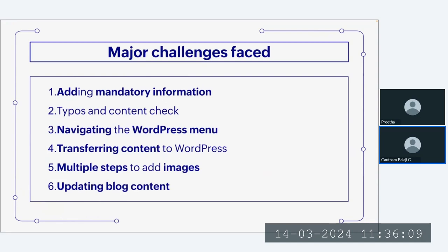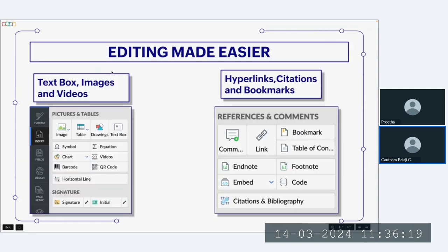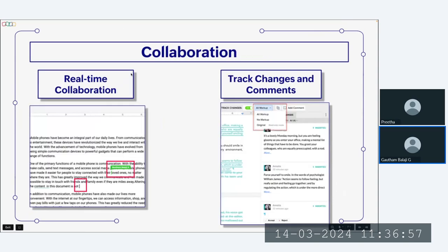Using Zoho Writer, all these challenges can be overcome. Let me show you the features we have in Writer. Editing has been made easier — you can insert text boxes, images, and videos into a document easily and then publish those documents. You can also add hyperlinks, citations, and bookmarks to your content before publishing.